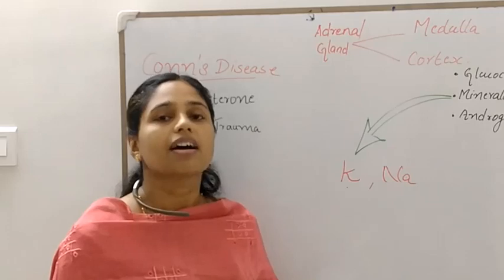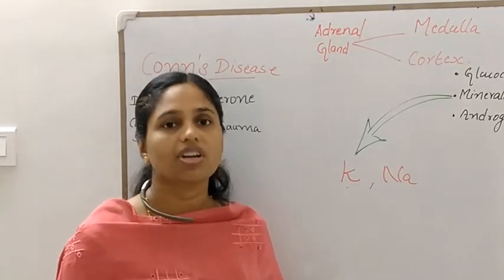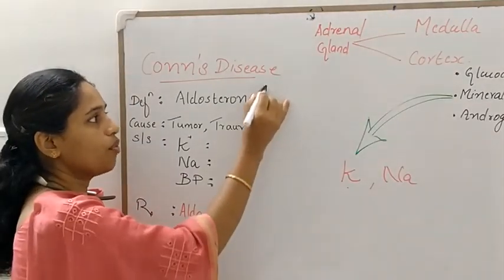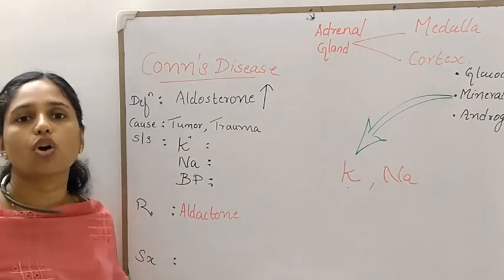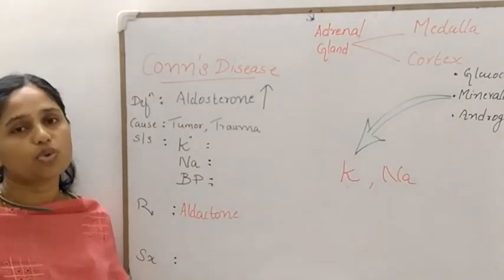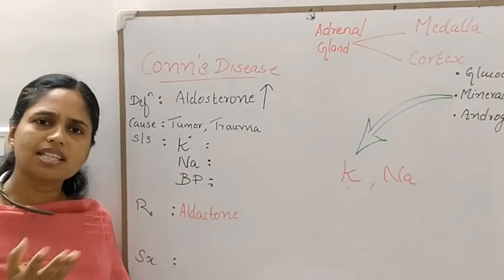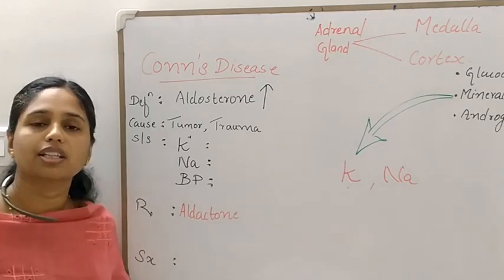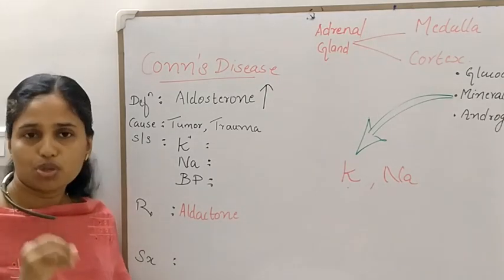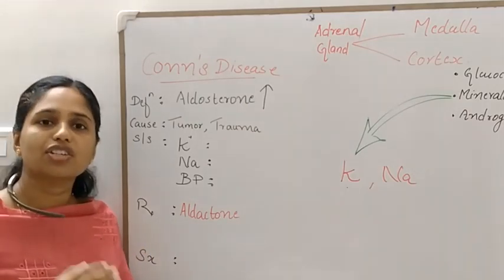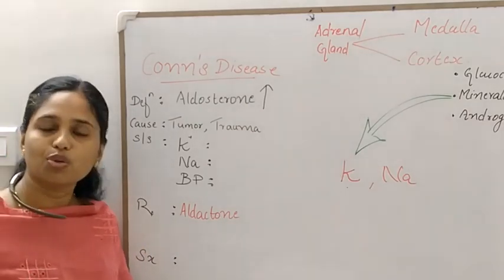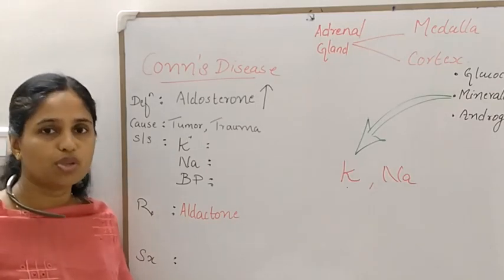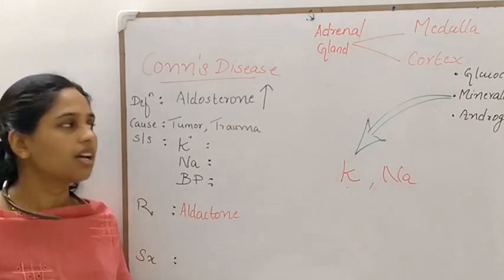When aldosterone increases, the condition is Conn's disease — hypersecretion of aldosterone. This is considered a very rare condition. The common cause is tumor or trauma. A tumor can be found in the adrenal cortex, and this causes excessive hormone production, leading to Conn's disease.